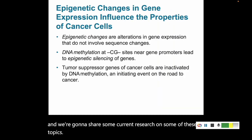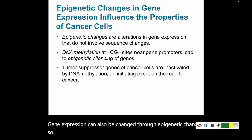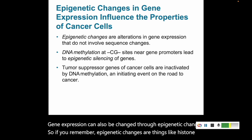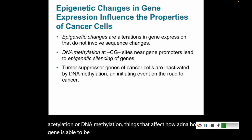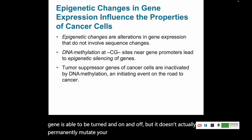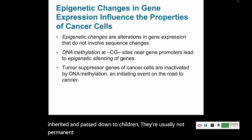Gene expression can also be changed through epigenetic changes. Epigenetic changes are things like histone acetylation or DNA methylation — things that affect how a gene is able to be turned on and off, but don't actually permanently mutate your DNA. Epigenetic changes can be inherited and passed down to children. They're usually not permanent; after a few generations, those epigenetic changes eventually fall off.